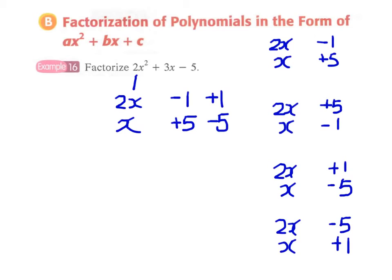Obviously the first group can't work because you have +10x - x giving 9x. What about the second group?